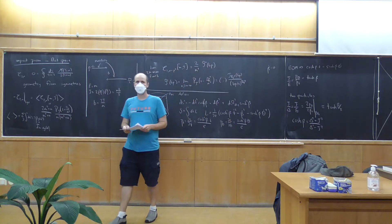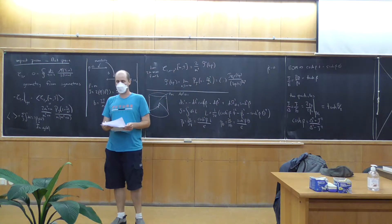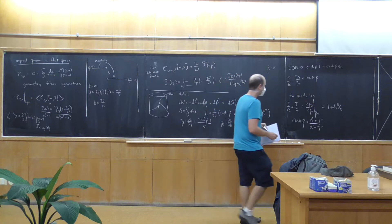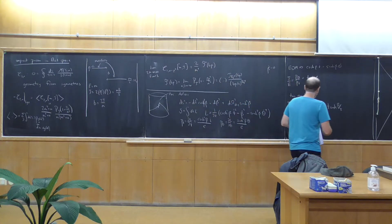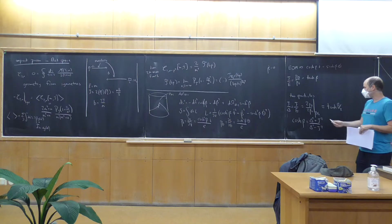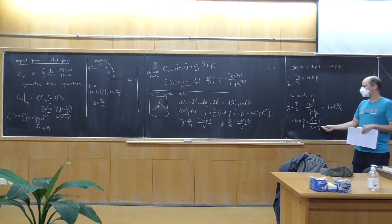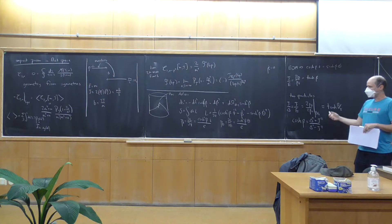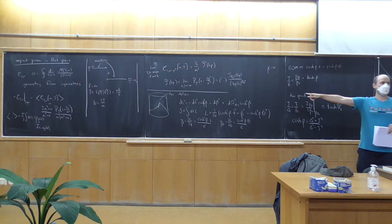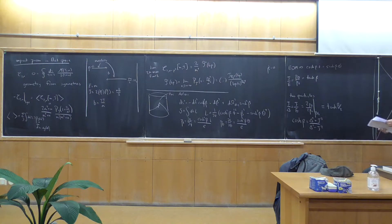You should check for yourself that in the limit where delta is much larger than J — which is the limit where the impact parameter is small, beta is small — you recover the flat space formula with M = delta. So just check that for yourself.